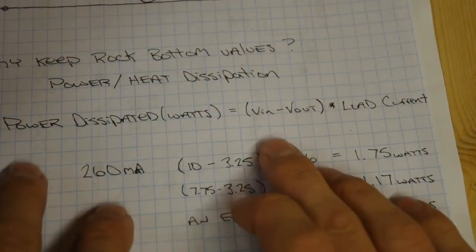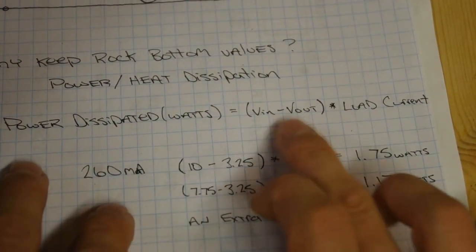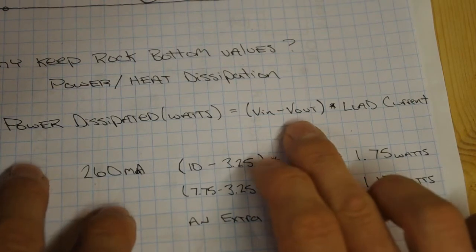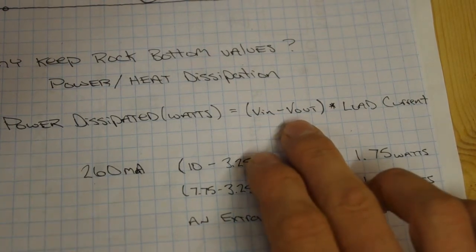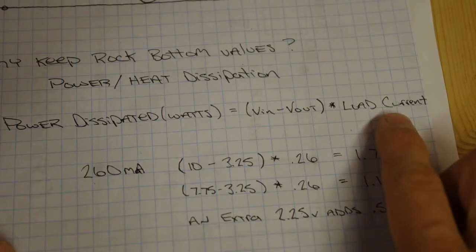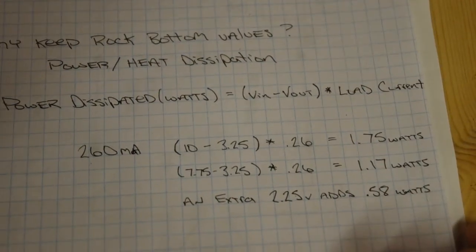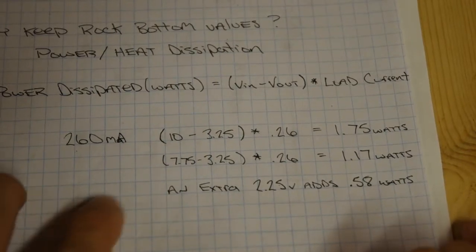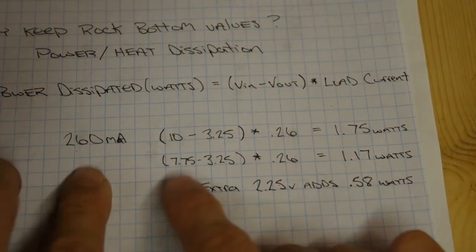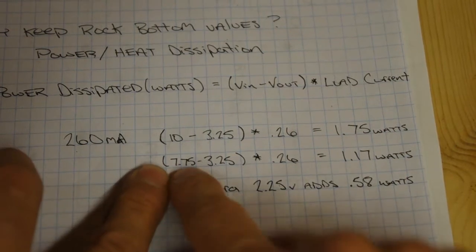Power dissipated in watts is equal to your voltage in minus your voltage out, which is basically what's staying inside of the 317, times your load current. I've estimated the circuit that I'm going to build to be about 260 milliamps. Just as an example, I plugged two different voltages, the one I'm using, 7.75, and just another arbitrary voltage, 10 volts, into the same formula to come up with the wattage.